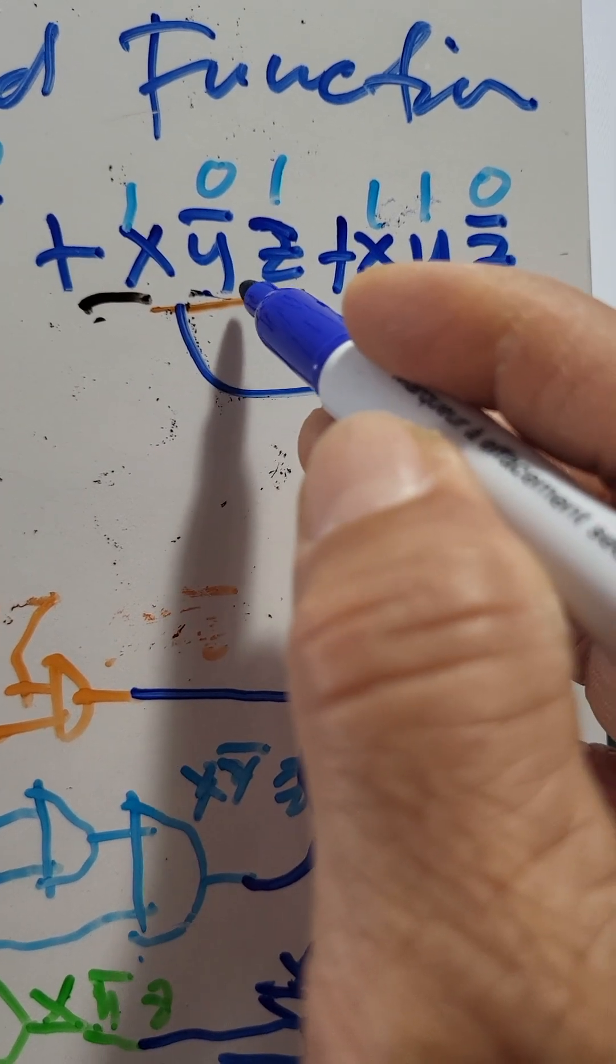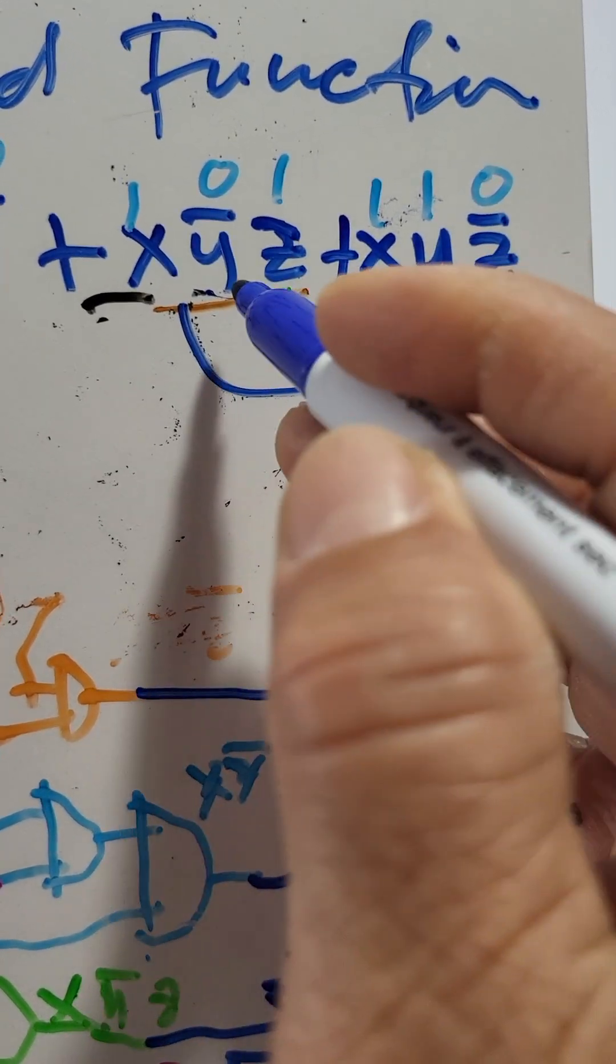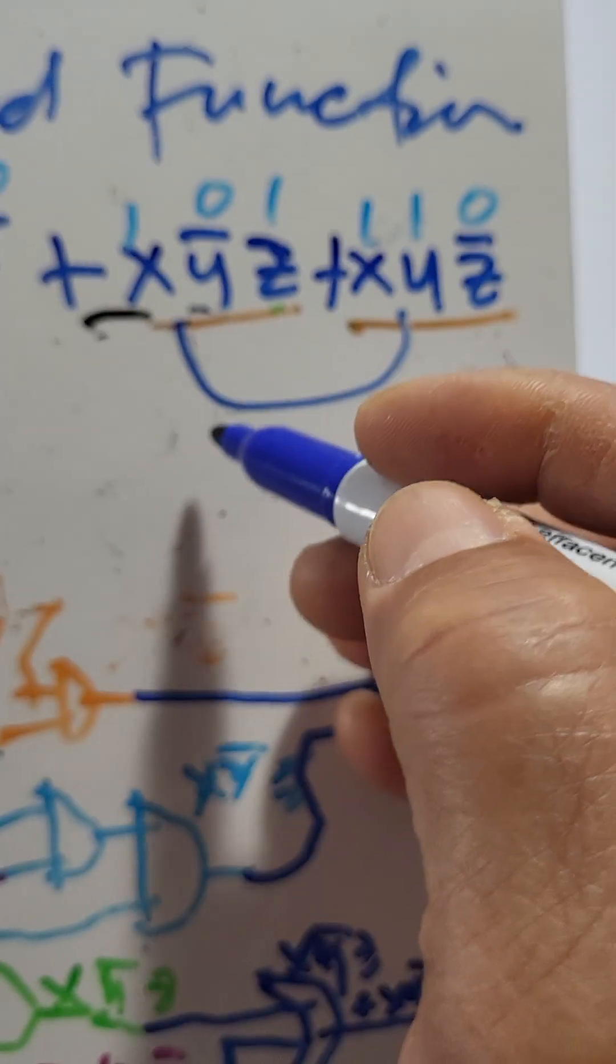This is actually an XOR, like an XOR output. So, we cannot cancel that one.